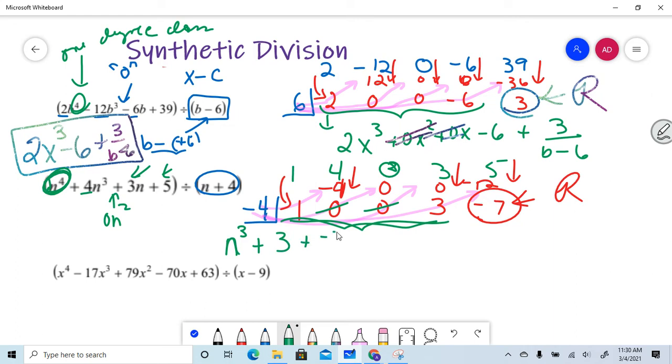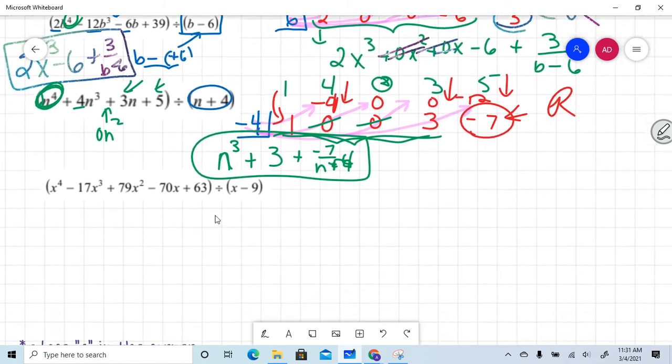And then a plus a negative seven sitting over my divisor. I know what you're thinking. Oh my God, I'm having so much fun. Let me do another one. And I agree. We're going to do another one here. I know, super exciting.